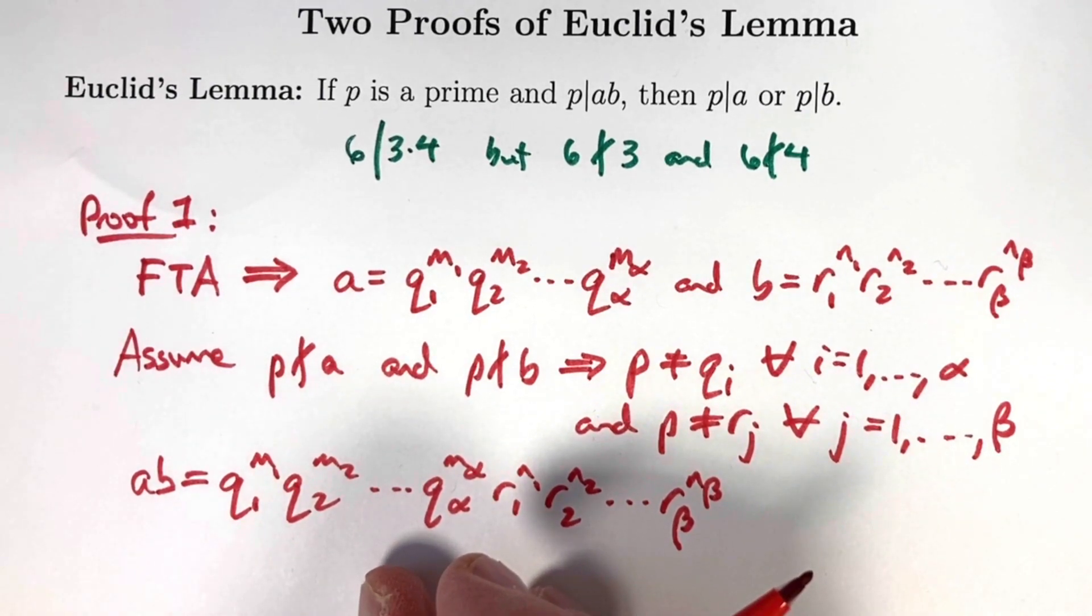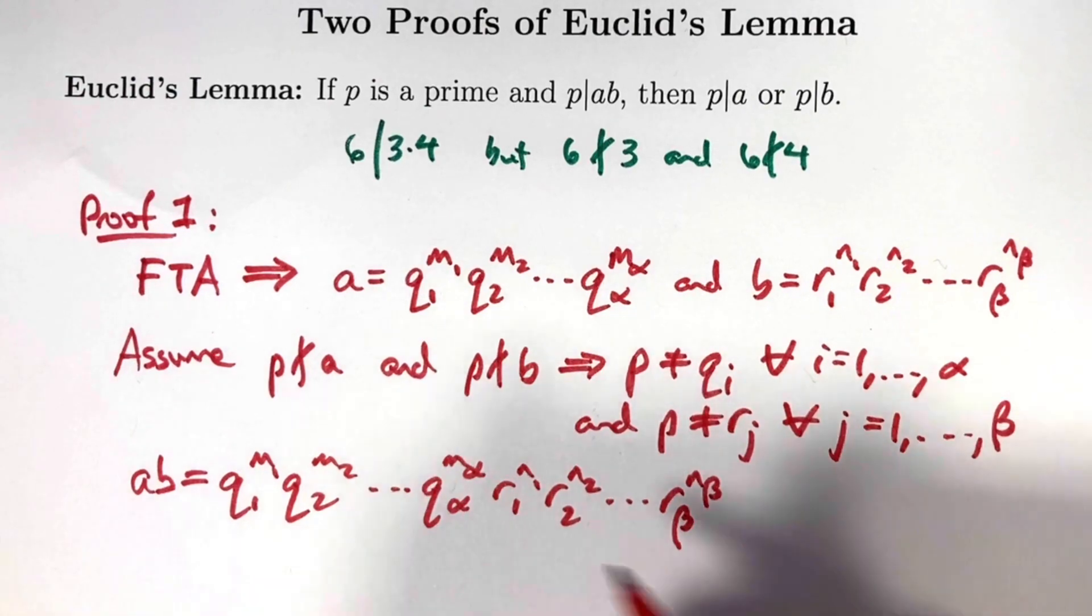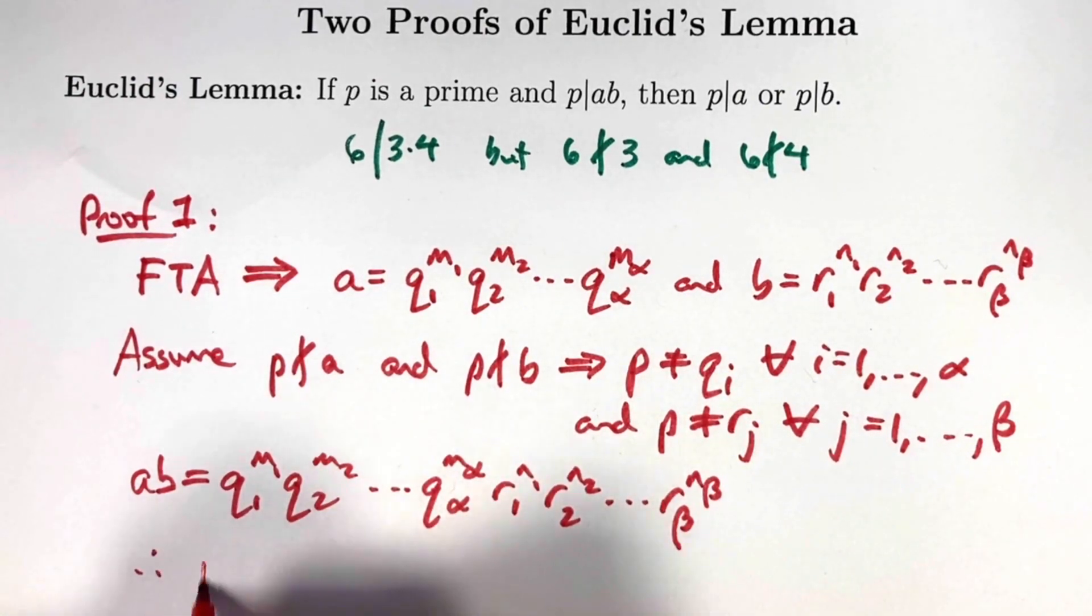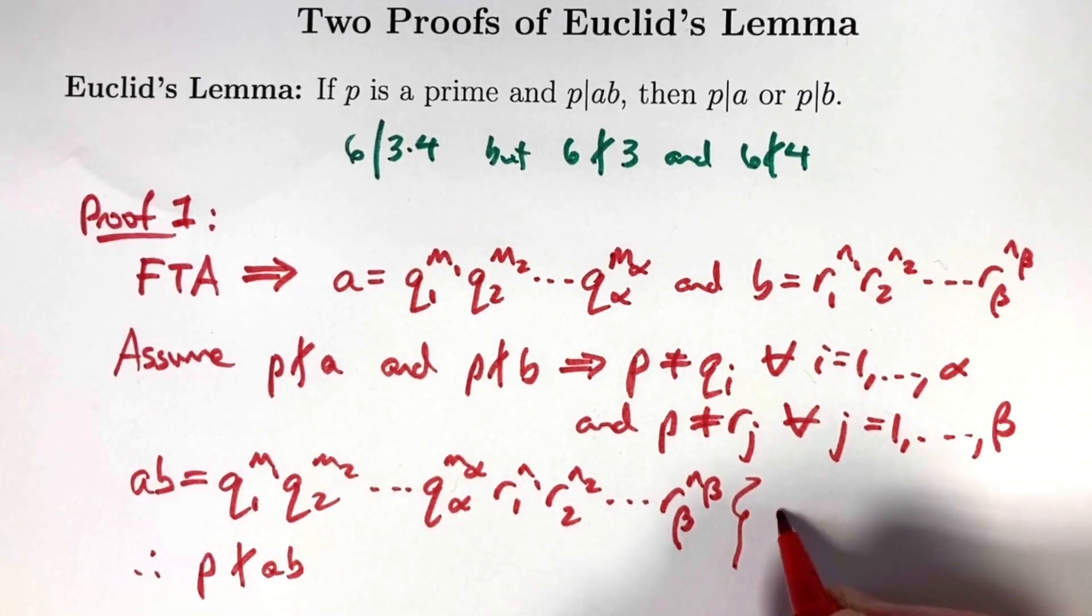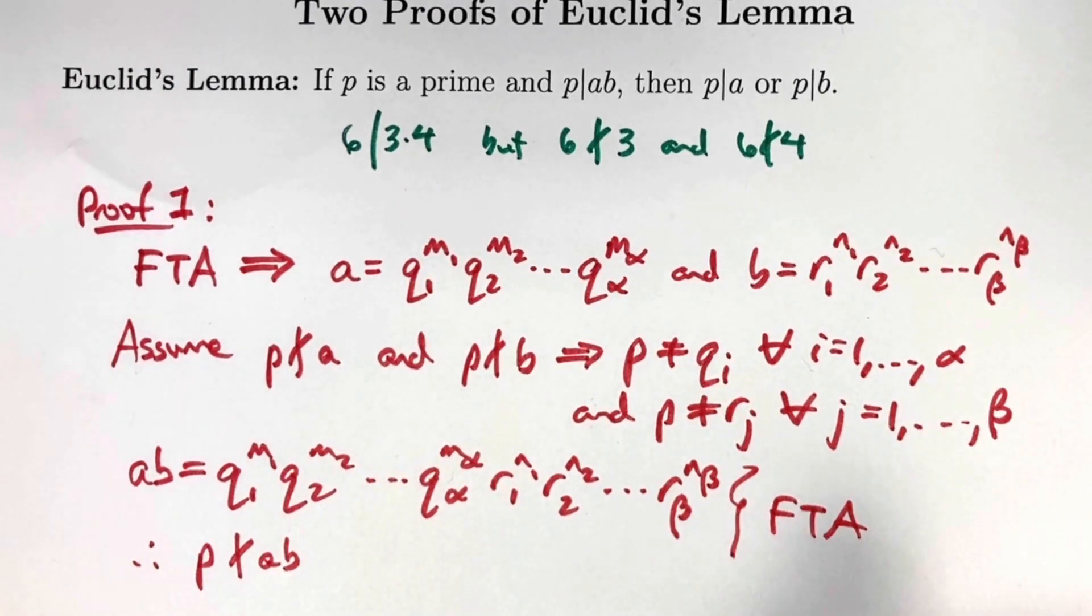This is the prime factorization of a times b based on these prime factors of a and b. With the fundamental theorem of arithmetic, we know this prime factorization is unique. We have unique primes from this. p was not one of the qs. p was not one of the rs. p is not any of these primes. Therefore, p does not divide a times b.